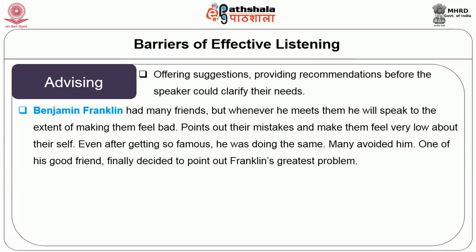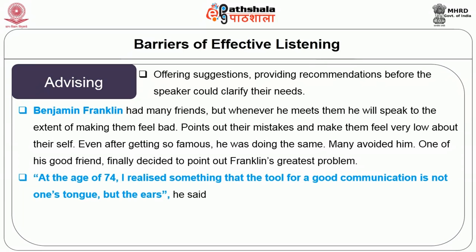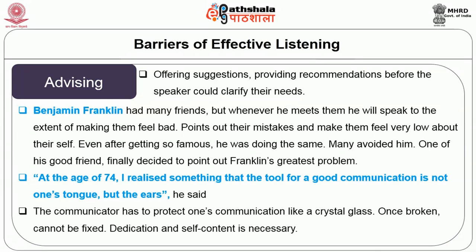According to Benjamin Franklin, he had many friends, but whenever he met them, he would speak to the extent of making them feel bad, pointing out their mistakes and making them feel very low about themselves. Even after becoming famous, he continued doing the same, and many avoided him. One of his good friends finally decided to point out Franklin's greatest problem. At the age of 74, Franklin realized that the tool for good communication is not one's tongue, but the ear. The communicator has to protect communication like a crystal glass — once broken, it cannot be fixed.